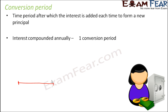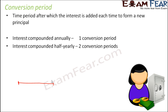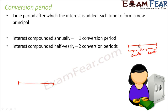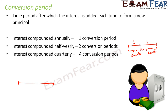For one complete year your principal is not going to change. When we say the interest is compounded half yearly, that means after every half year — half year would be six months — after every six months your principal will change. Your principal will become equal to the amount of the first six months. So it is basically divided into two conversion periods: one conversion period plus one more conversion period, making two conversion periods.